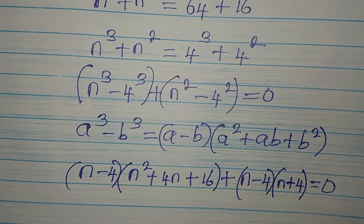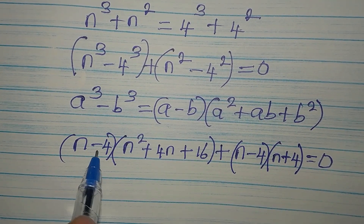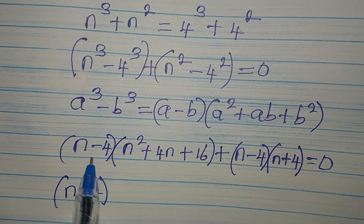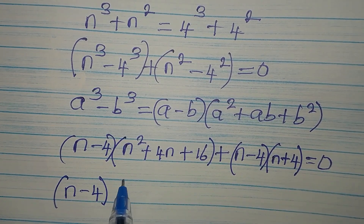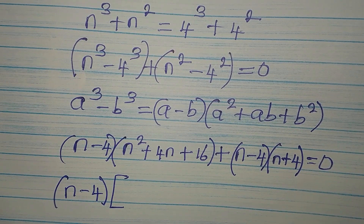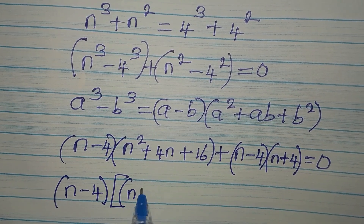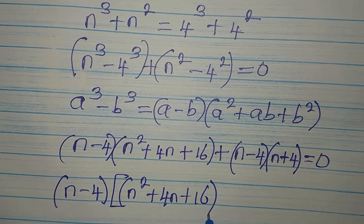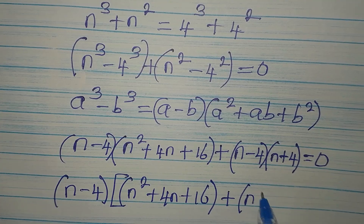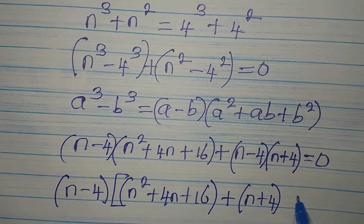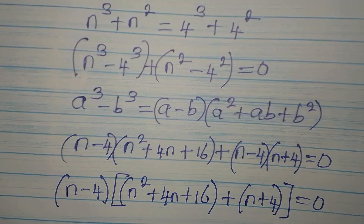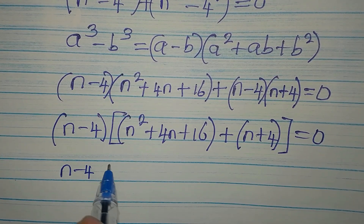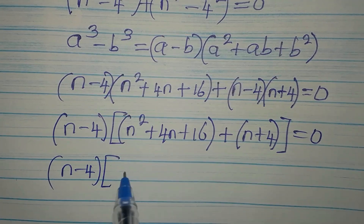Everything equals 0. There is (n minus 4) here and (n minus 4) there, so it comes out as the common factor. We now have (n minus 4) times [(n² + 4n + 16) + (n + 4)] equals 0.